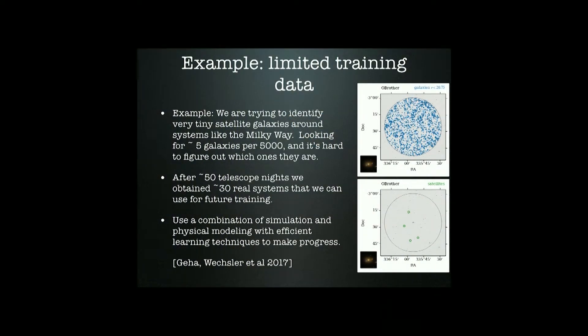A second challenge is really limited training data. One example is a project where we're trying to identify galaxies like the Milky Way and find the little satellite galaxies that orbit them — a very hard observational problem with potential to tell us about the nature of dark matter. You're looking for something like a handful of objects among about 5,000, and you want to do that for many systems. The training data is very expensive to get — we spent about 50 telescope nights on this project so far and got about 30 real systems. We also have a lot of non-real systems, which helps us learn what we don't need to look at in the future. We have to be smart about using that limited training data along with physical models.